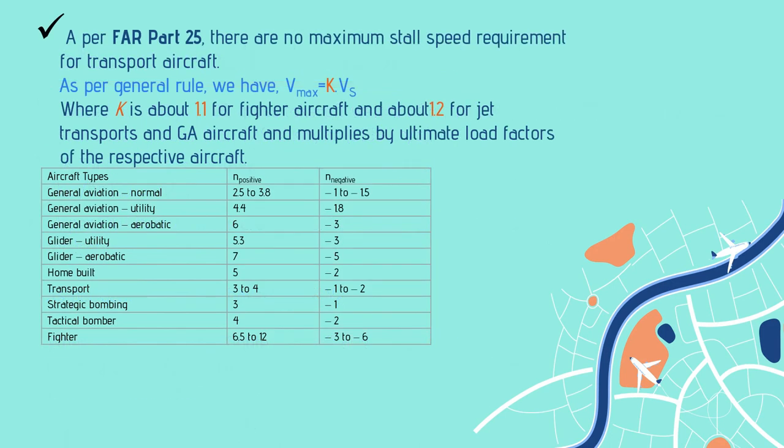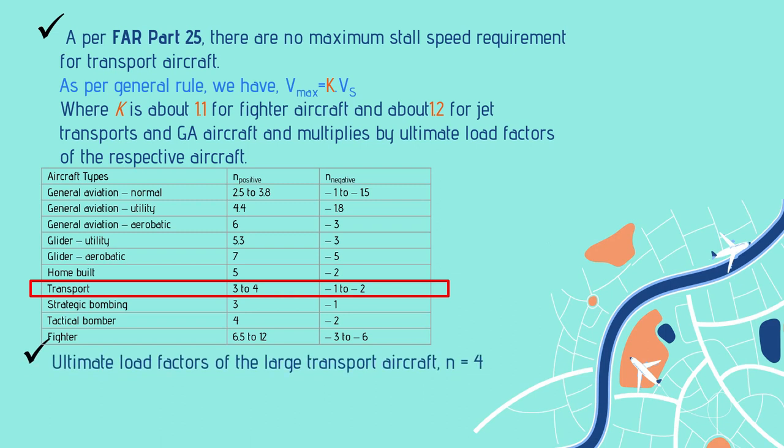For this transport jet, the maximum ultimate load factor is 4. Computing: V_stall = 290 / (1.2 × 4) = 60.42 m/s. Based on your type of aircraft, multiply by the appropriate ultimate load factor.